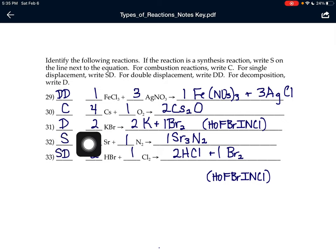31 I knew was a decomposition because there's only one thing on the left-hand side of the arrow, that KBr. So the only thing it can do is break up. So the potassium and the bromine separate. Because bromine is a half-brinkle, I have to write Br₂. And then we have to balance with our coefficients, 1, 2, 2.